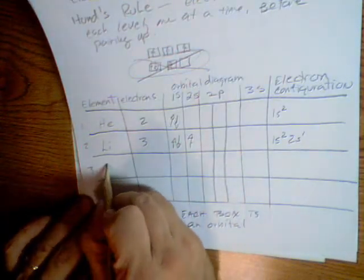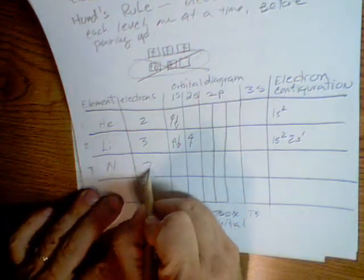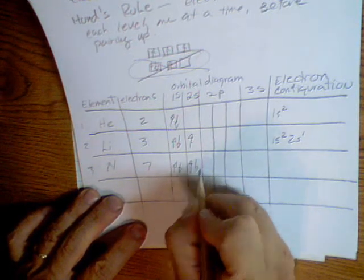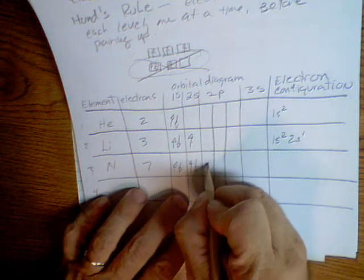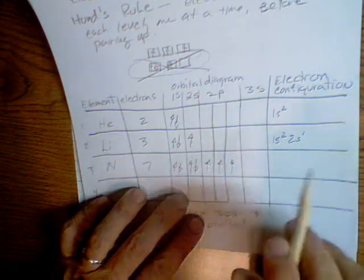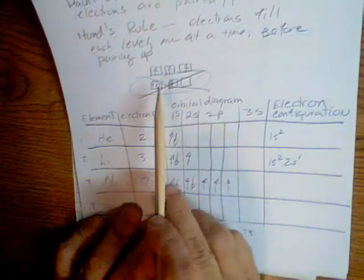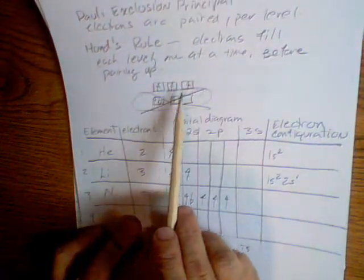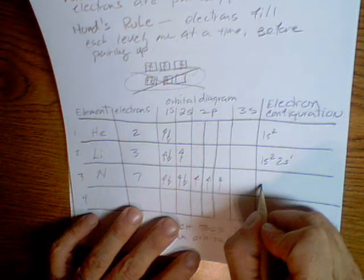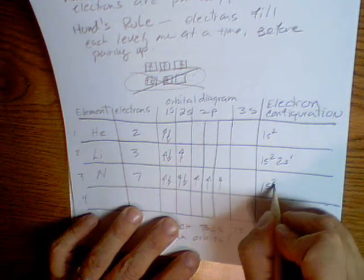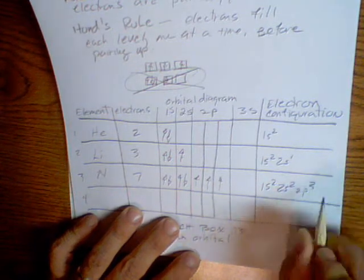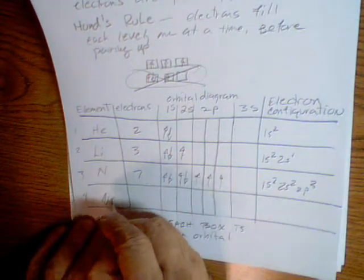And then, we could do another one. So, we would have two and the 2. We fill up our first. We fill up our S with two. And then, we fill each of these individually before we go on. And just as the Hund's rule says. And then, that would be, we have 1s2, 2s2, 2p3.